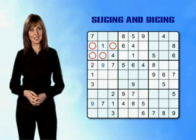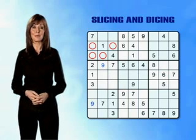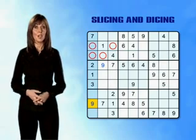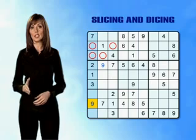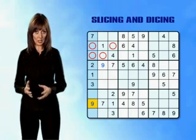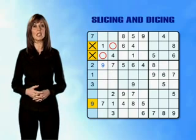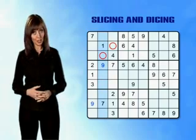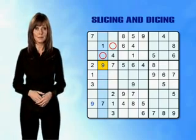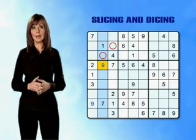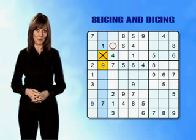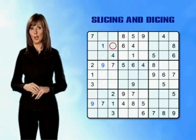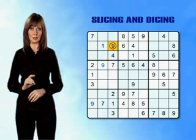Now we can use dicing to narrow down those options. Dicing down through column 1, we find a number 9 in row 8. We know there can only be one of each number in each column, so we can immediately rule out our two empty boxes in rows 2 and 3 of column 1. Dicing down through column 2, we find a number 9 in row 4, which now rules out the empty box in row 3 of column 2. After slicing and dicing, we are only left with one possible box in the top-left mini-grid which can contain a number 9.